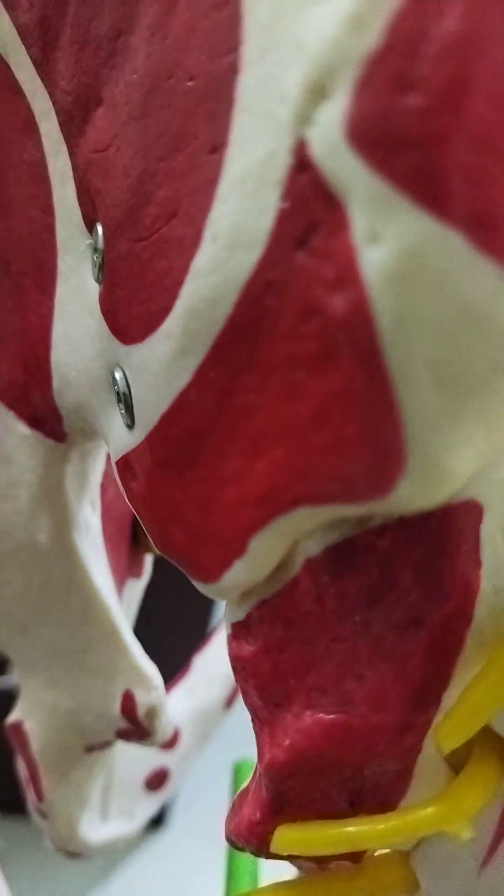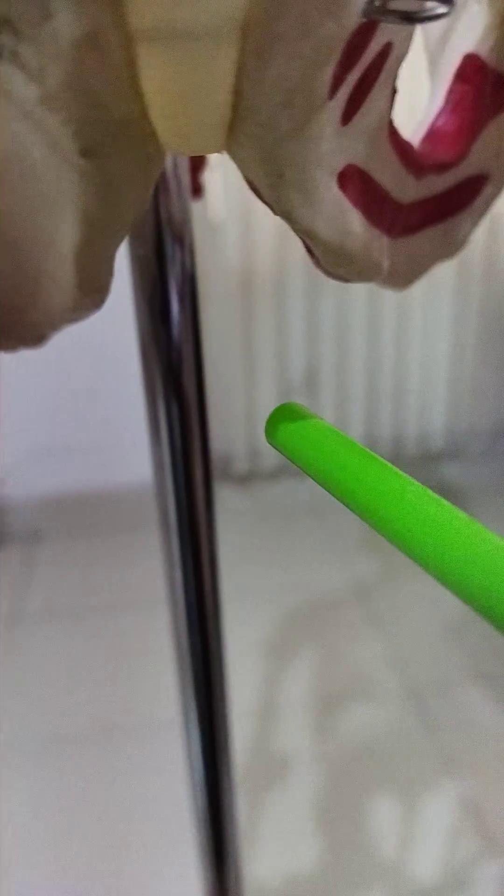It supplies the posterior scrotal branch and also supplies the dorsal nerve of the penis or dorsal nerve of the clitoris, and perineal branches for the muscles of the perineum. You see this is the urogenital triangle here.